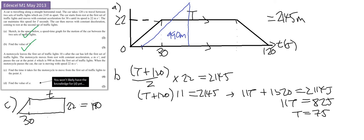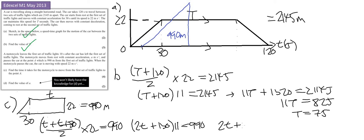So we're going to set up the trapezium. We've got t plus t plus 30 divided by 2 times 22 equals 990. Okay, so that means we've got 2t plus 30 times 11 equals 990. So then that means that 2t plus 30 equals 90, and therefore 2t equals 60.